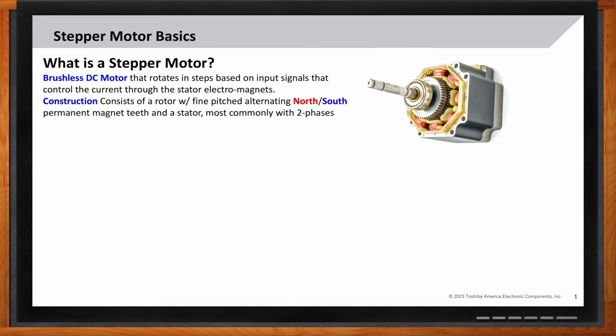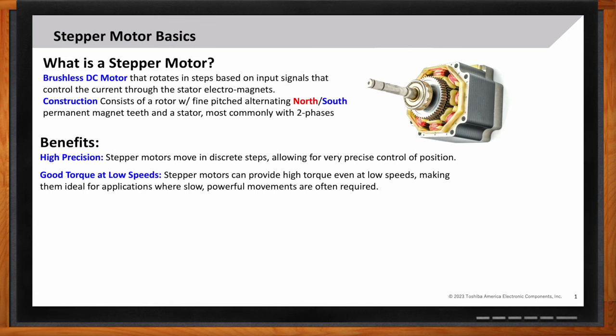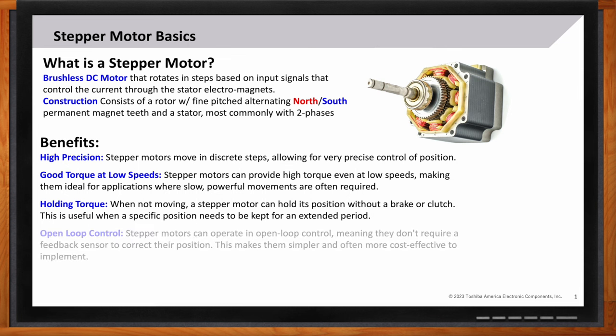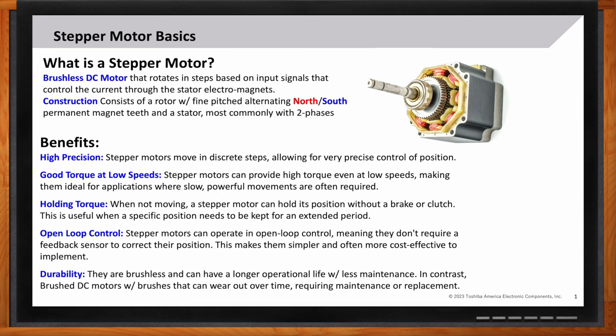Key benefits are that it has high precision, it has very good torque, especially at low speeds. And this is ideal for applications where slow, powerful movement is required. It also has a holding torque. And this is sometimes called a detent torque. So when you're not actually moving, you can hold the motor in position without a brake or a clutch. One of the other key benefits is that it can do precise control open loop, meaning you don't need a complex feedback system to control the position of the motor. And finally, since it is a brushless motor, it is much more durable than a brushed system.